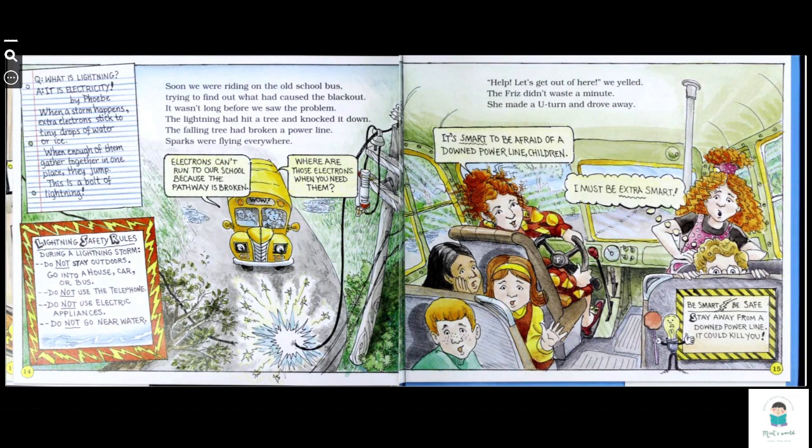Soon, we were riding on the old school bus trying to find out what had caused the blackout. It wasn't long before we saw the problem. The lightning had hit a tree and knocked it down. The falling tree had broken a power line. Sparks were flying everywhere. Electrons can't run to our school because the pathway is broken.